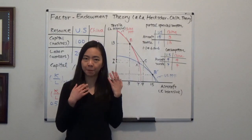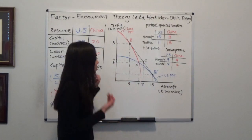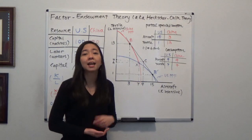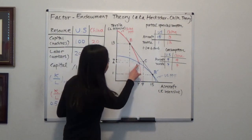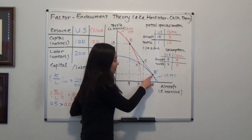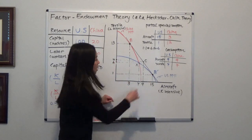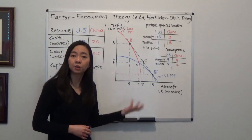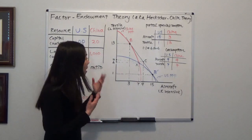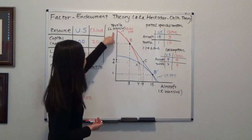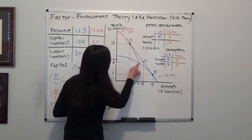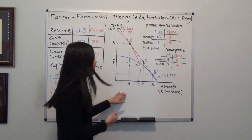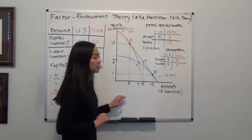Now suppose the two countries start to partially specialize and trade. Because the U.S. is relatively capital abundant, it is going to partially specialize in the capital-intensive good, meaning aircraft. So they move from point A to point B prime, producing 15 units of aircraft and one unit of textile. China, being labor abundant, partially specializes in the labor-intensive good — textile — moving from point A to point B, producing 13 units of textile and only three units of aircraft.